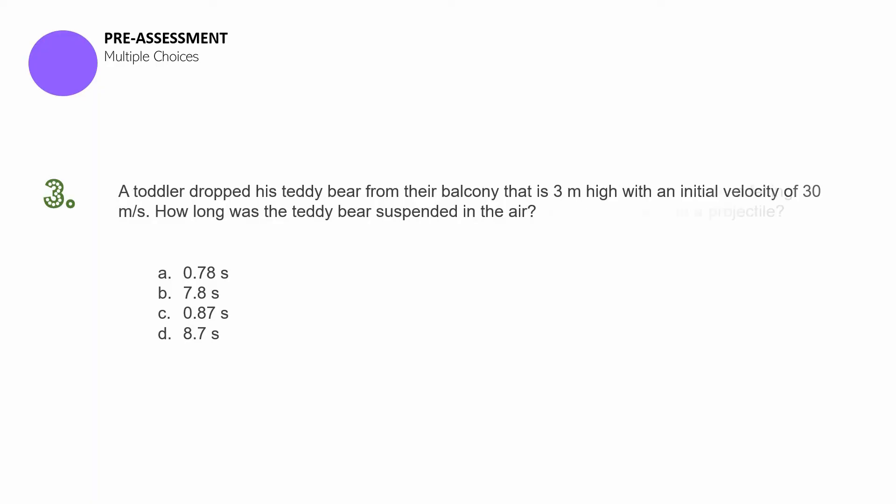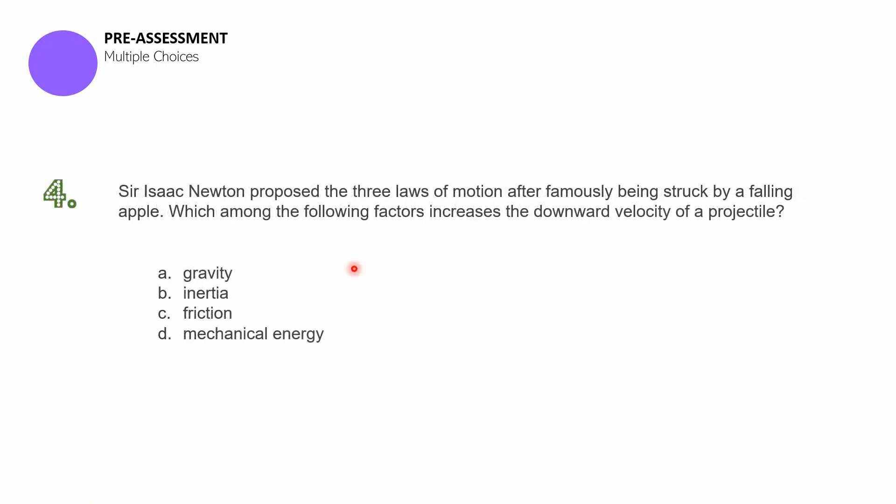Question number four. Sir Isaac Newton proposed the three laws of motion after famously being struck by a falling apple. Which among the following factors increases the downward velocity of a projectile? A. Gravity. B. Inertia. C. Friction. D. Mechanical energy.